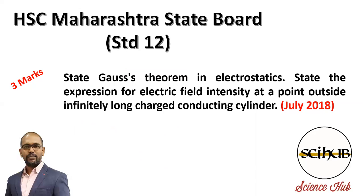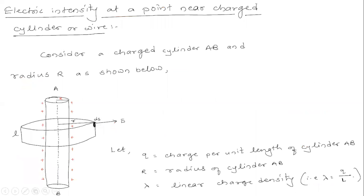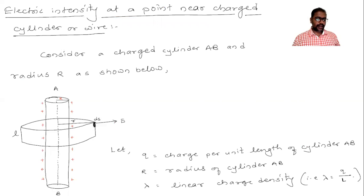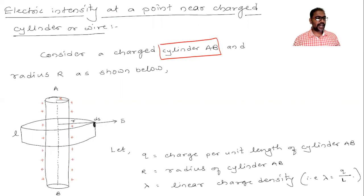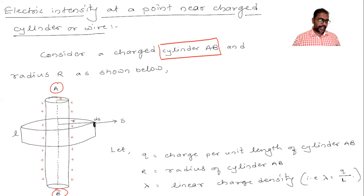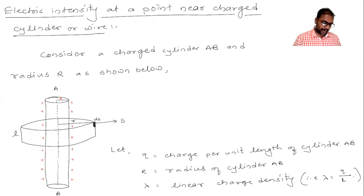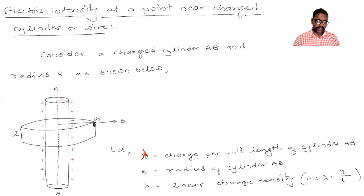Now we use this Gauss's theorem to obtain the expression for electric intensity. We consider a charged cylinder AB of radius R, as shown below. The charges are on its surface. Here, lambda is the linear charge density — charge per unit length — and capital R is the radius of the cylinder.